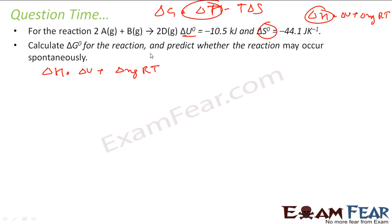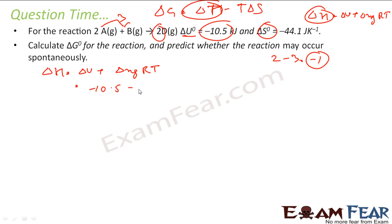Now, how many moles of gas are changed? There are 2 moles on the product side, and 1 plus 1 equals 3 moles on the reactant side. So 2 minus 3 is minus 1, therefore delta Ng is minus 1. Putting in values: delta U is minus 10.5, plus delta Ng is minus 1, into R is 8.314 into 10 to the power minus 3 kilojoules, into T which is 298 Kelvin, since everything is standard.